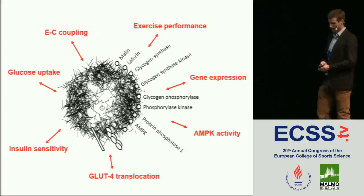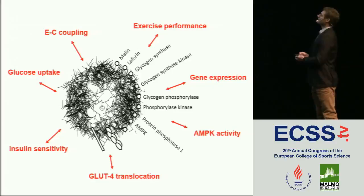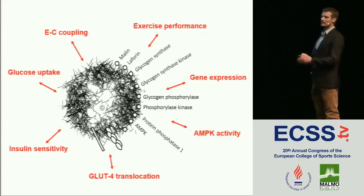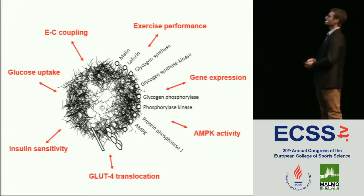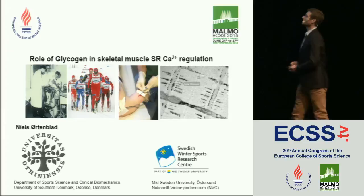We know that glycogen affects EC coupling at various steps. Glycogen's role in exercise performance has been known for more than 100 years. We also know that glycogen affects gene expression, AMP kinase activity, GLUT4 translocation, insulin sensitivity, and glucose uptake. In this session, I will talk about exercise performance and EC coupling — especially calcium regulation. Robin Murphy will talk about associated proteins and the effect of exercise on their localization, and Clara Pratz will talk about insulin sensitivity, glucose uptake, and the effect of glycogen localization.